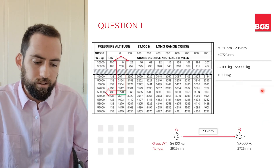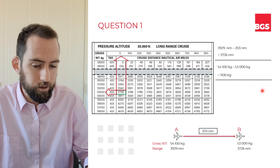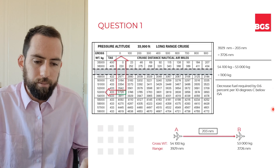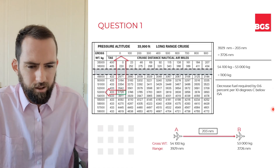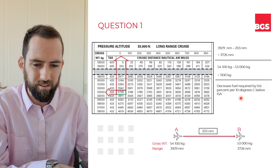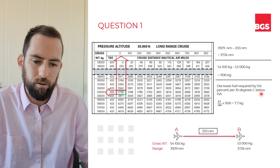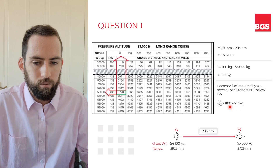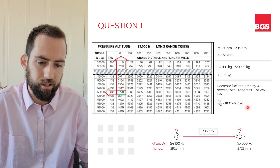That's not quite the final answer, because there's a second ISA deviation correction to make: we need to decrease the fuel required by 0.6% per 10 degrees Celsius below ISA. That's not going to make a huge difference, but we need to do it anyway. Since our ISA deviation was minus 12 and not minus 10, it would actually be 0.72% — approximately 0.7% — multiplied by 1,100 kgs, which means we reduce the fuel by 7.7 kgs.